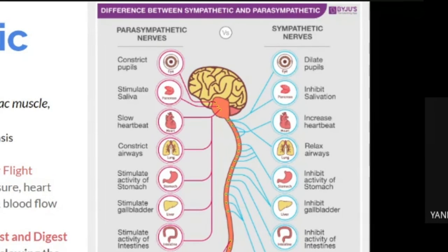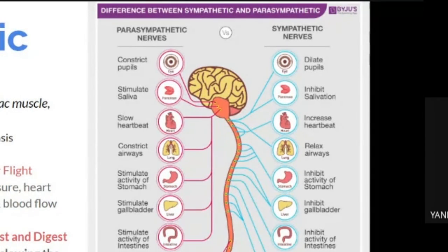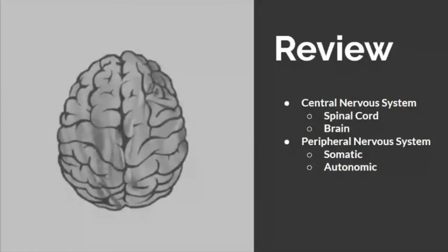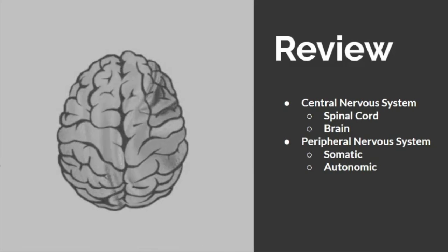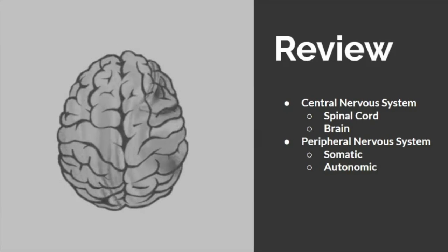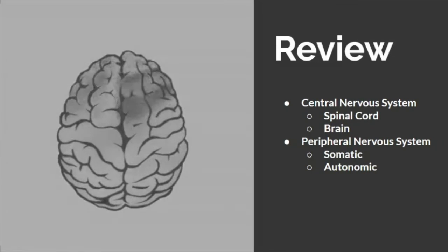The parasympathetic nervous system constricts pupils, stimulates saliva, slows heartbeat, constricts airways, stimulates activity of the stomach and gallbladder, stimulates activity of the intestines, and contracts the bladder. In review: the central nervous system — spinal cord and brain — coordinates information and directs responses. The peripheral nervous system is subdivided into somatic (voluntary actions like walking) and autonomic (involuntary actions like heartbeat and blood pressure).